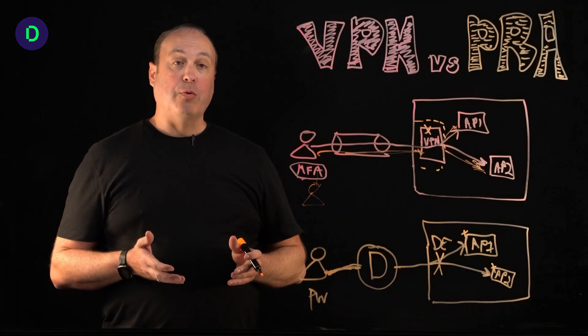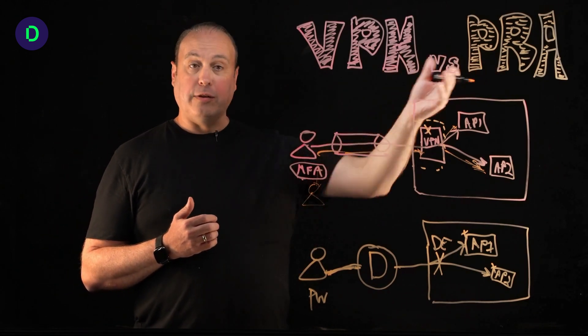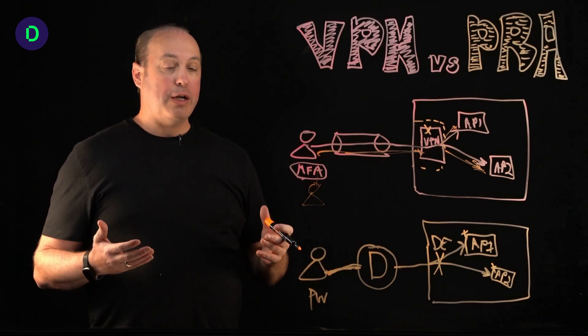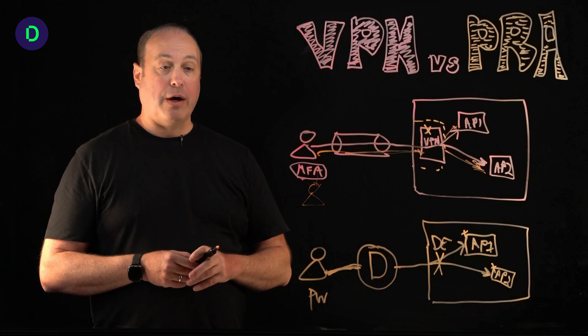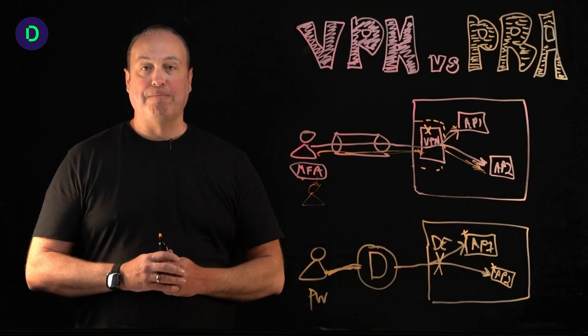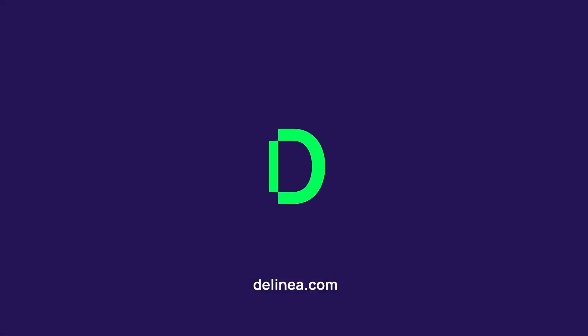That's the difference between a VPN, virtual private network, and privileged remote access, Delinea's solution in this area. And it's a major reason why organizations are turning away from their VPNs and going to other more secure methods of getting their users remote access. I'm Jeff Carpenter. Thank you for listening. And visit Delinea.com for more information.